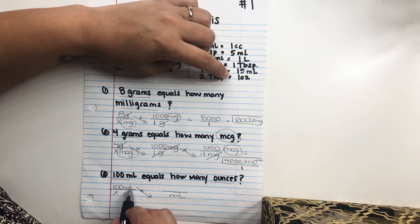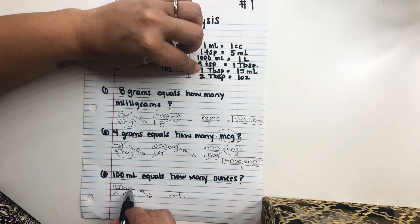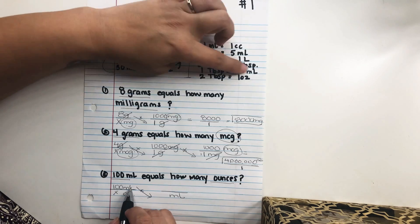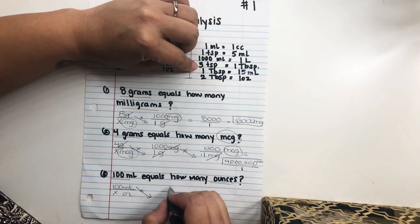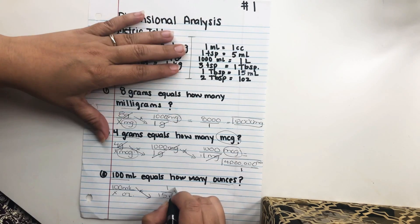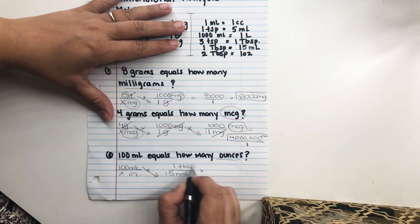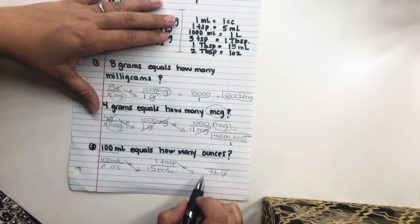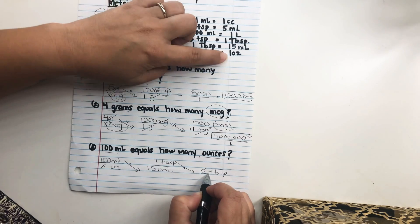Okay. We know that two tablespoons equals one ounce. So we need to get to ounces. So we have to, in order to convert, we have to go from milliliters to ounces. So the only way to do that is to use this conversion right here, and then work down to use this conversion. So we're converting twice. So we know that 15 milliliters equals one tablespoon. Okay. And then we have a tablespoon here. We're going to put a tablespoon here.